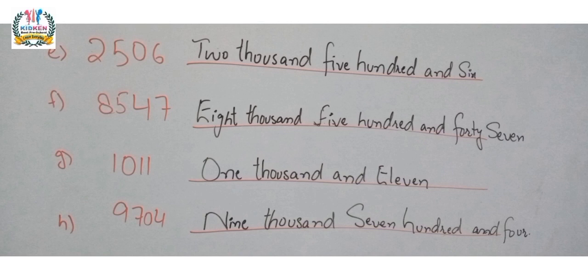Our H part is 9704. So we can write these numbers in words: nine thousand seven hundred and four.